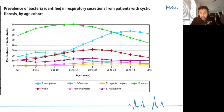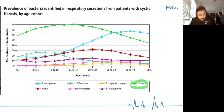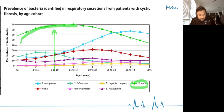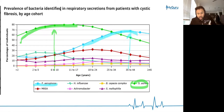This chart shows that Staph aureus is going to peak in the young — around ages six to ten — whereas Pseudomonas aeruginosa is going to peak a little bit later on.